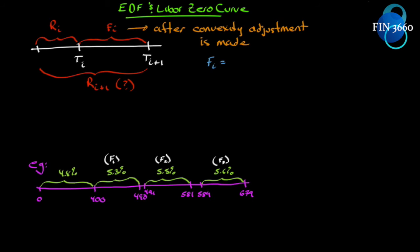We saw back in chapter four that we can use forward rates to calculate our zero rates to draw out our zero curve. If we apply a convexity adjustment to the Euro dollar futures rate, we will get the forward rate. Hence, we should be able to use Euro dollar futures rates to do the same thing.